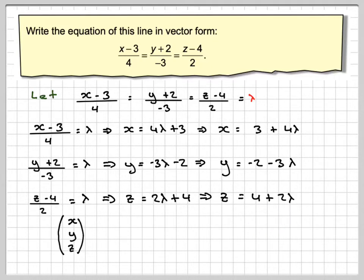Now, so x, y and z will be equal to the point, which is going to be given from these 3, minus 2, 4, plus lambda times the directional vector, which is going to be 4, minus 3, 2.